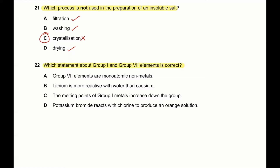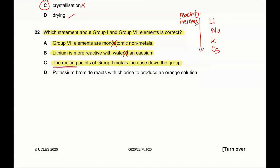Question 22: which statement about Group 1 and Group 7 elements is correct? Group 7 elements are monoatomic non-metals — that's wrong because Group 7 elements are diatomic. Lithium is more reactive with water than cesium — we know that down Group 1 (lithium, sodium, potassium, cesium) reactivity increases, so this is a wrong statement. The melting point of Group 1 metals increases down the group — we know melting point decreases down the group, so this is also wrong.